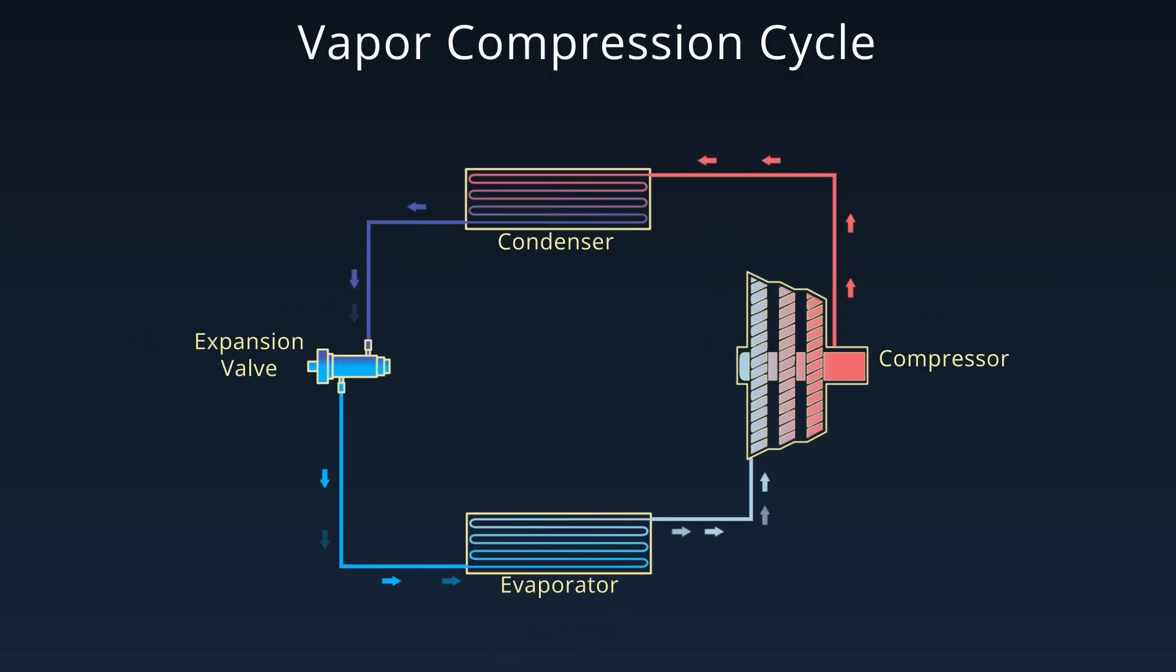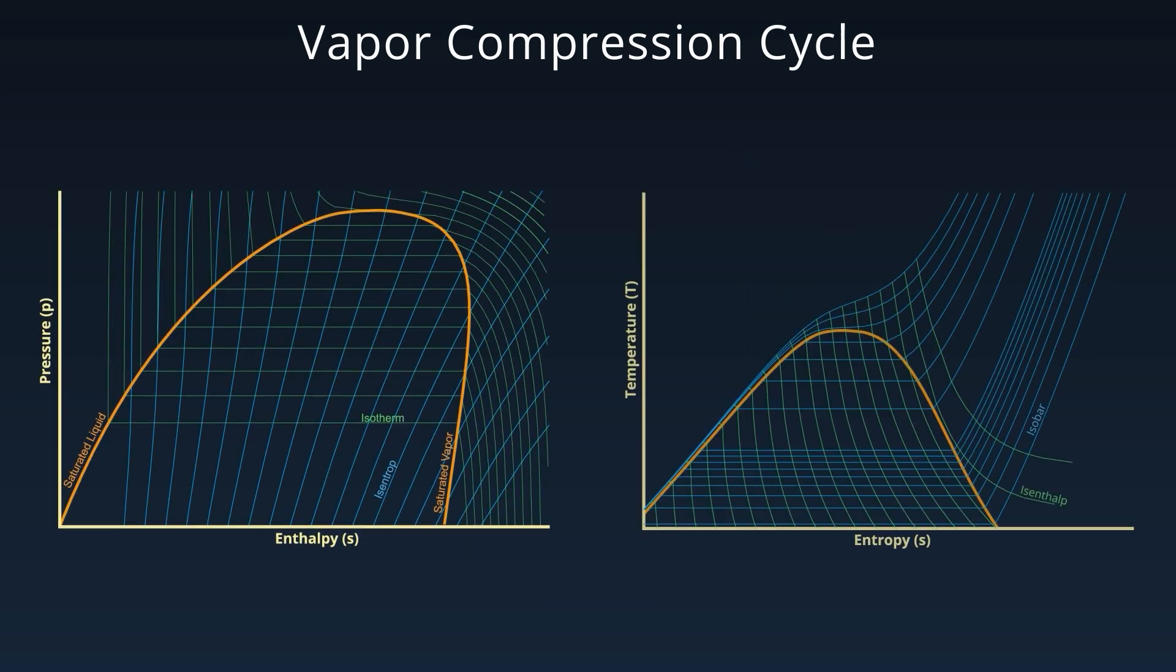The cycle has four key thermodynamic processes and we'll walk through each one using pressure enthalpy and temperature entropy diagrams to visualize energy transfer.